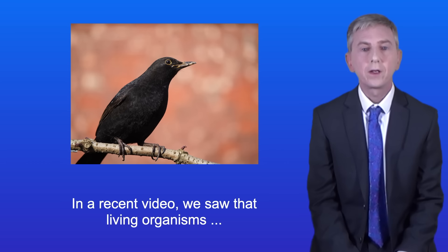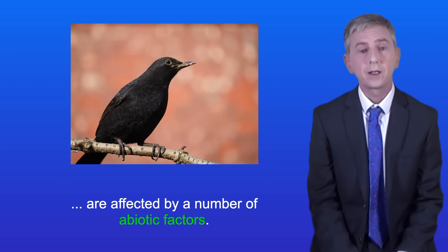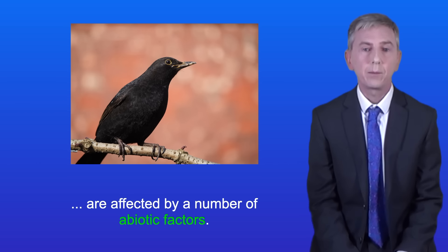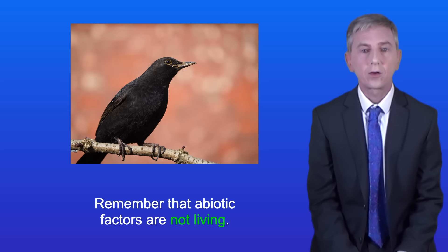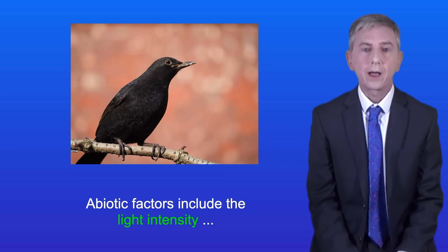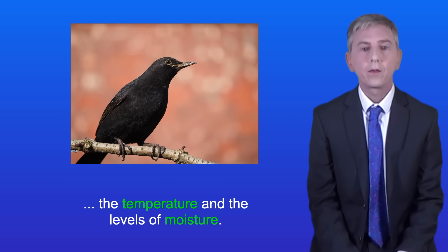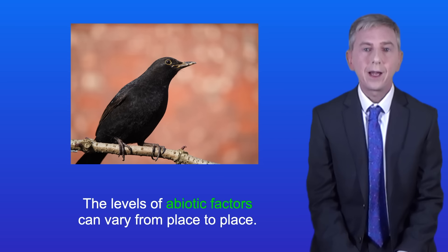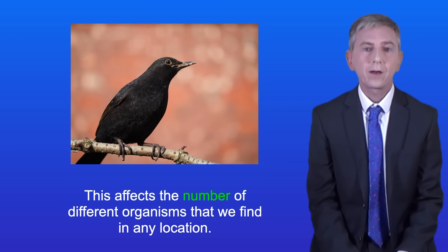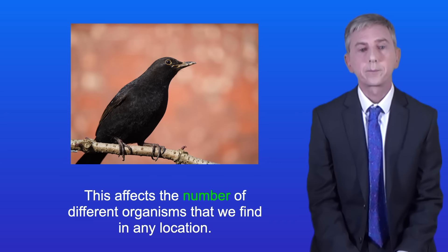In a recent video we saw that living organisms are affected by a number of abiotic factors, and remember that abiotic factors are not living. Abiotic factors include the light intensity, the temperature and the levels of moisture. The levels of abiotic factors can vary from place to place and this affects the number of different organisms that we find in any location.